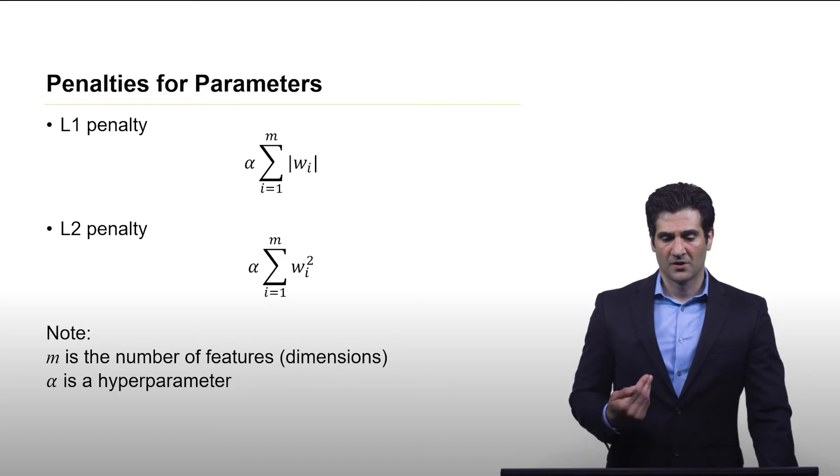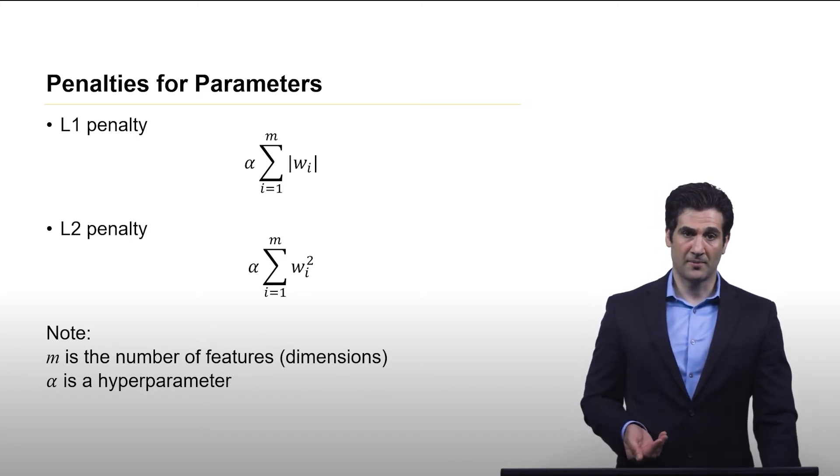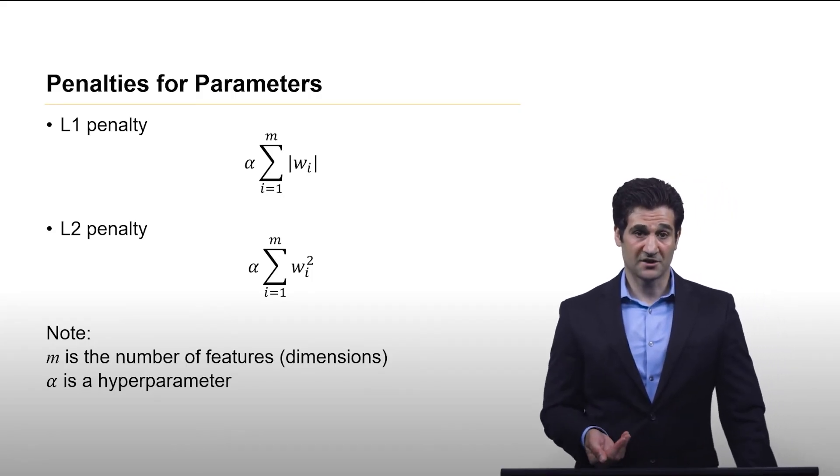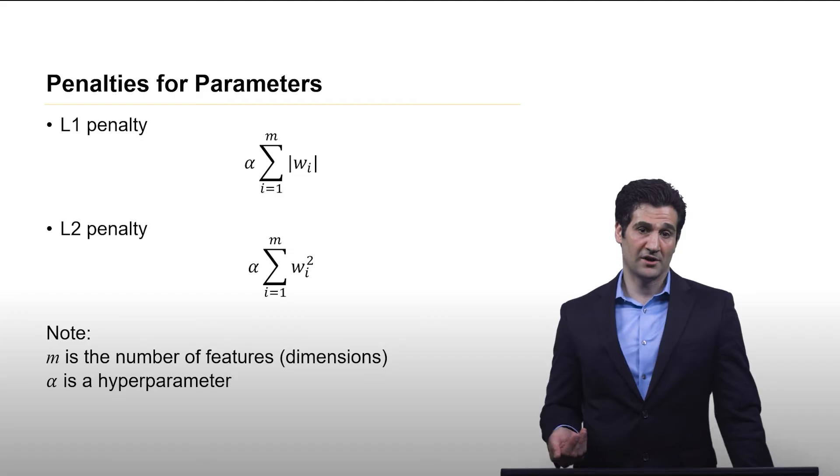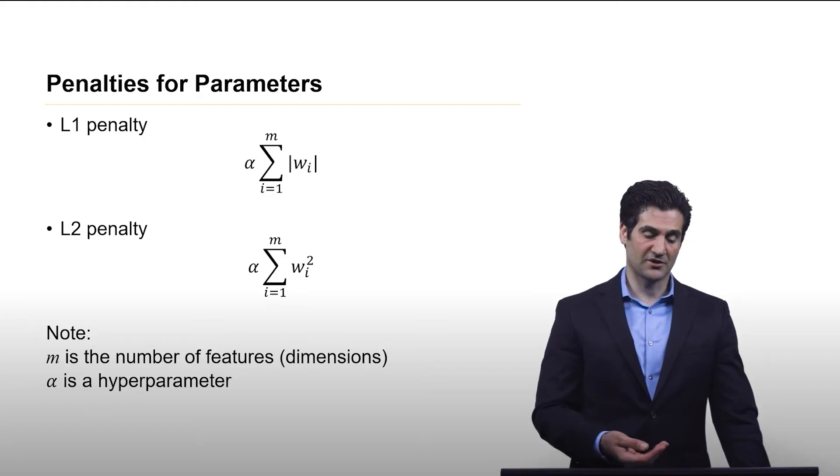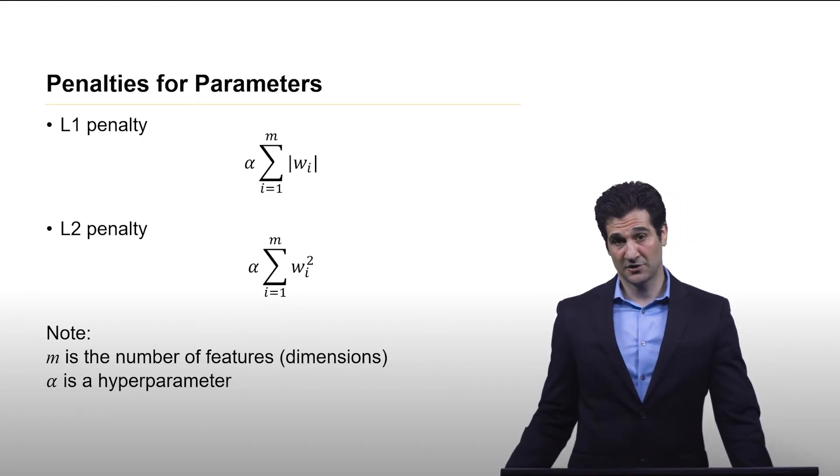For this there are basically two very popular ways of penalizing your weights associated with features, and they're L1 and L2 penalties. What you do is you have essentially a sum of the weights with this additional hyperparameter alpha, and this gets added to your objective function.